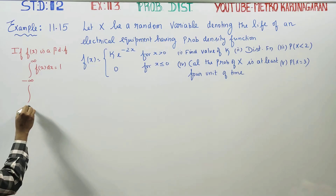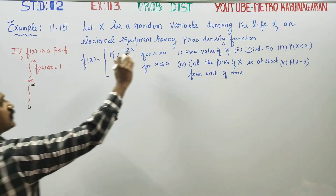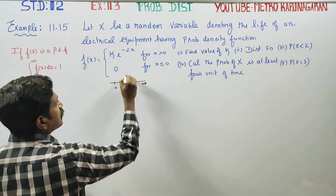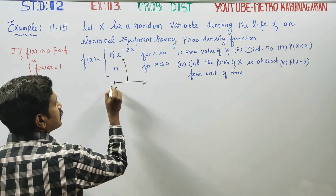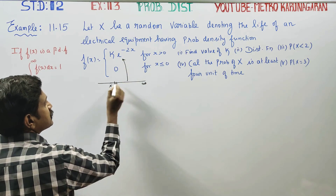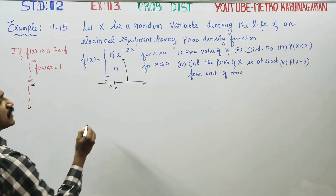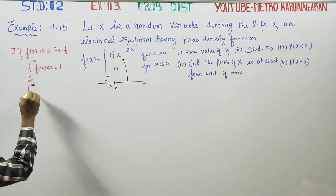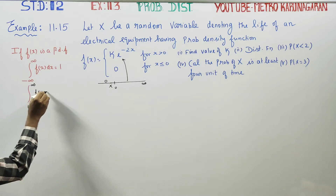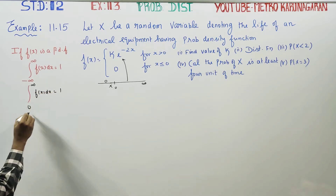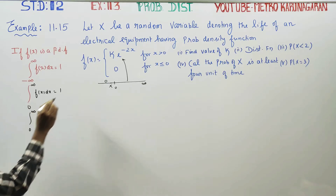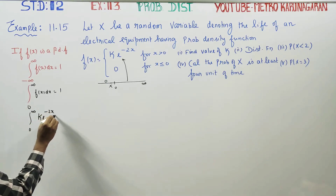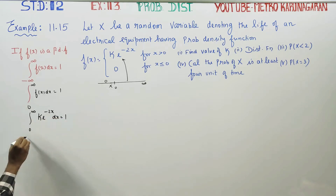The function is defined from 0 to infinity for x greater than 0, and 0 for x less than 0. So the integral from 0 to infinity of f(x) dx equals 1. That gives us the integral from 0 to infinity of K times e to the power minus 2x dx equals 1.